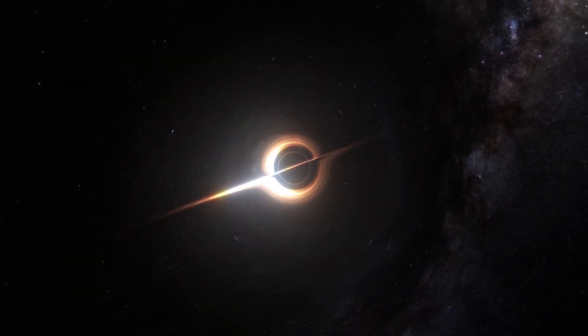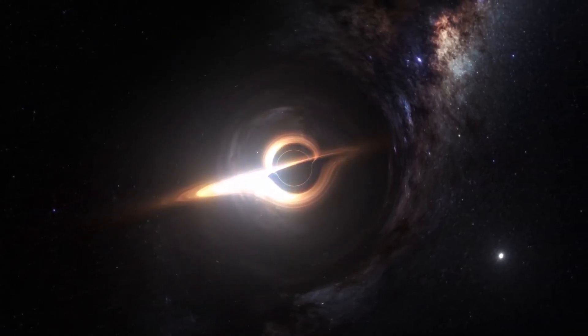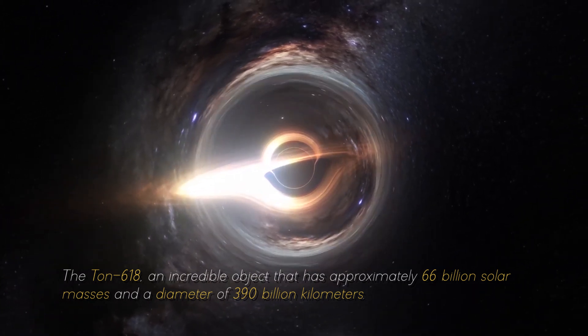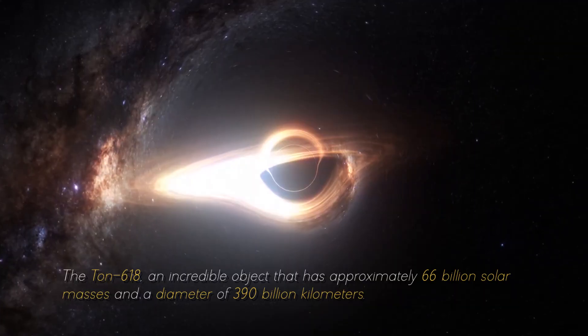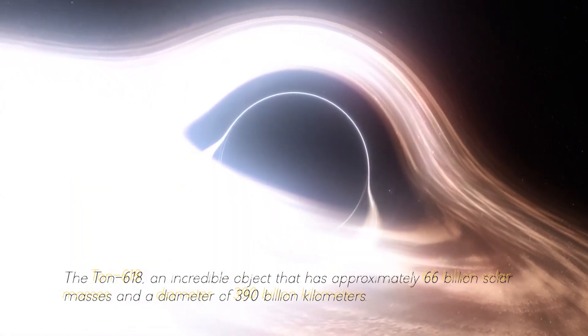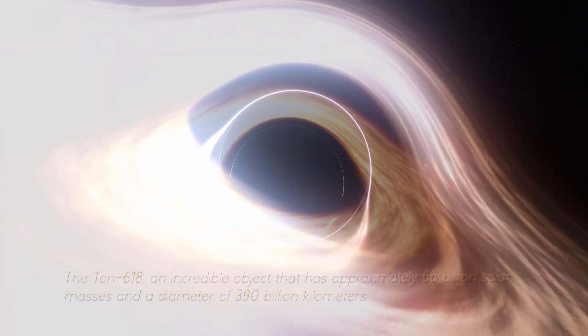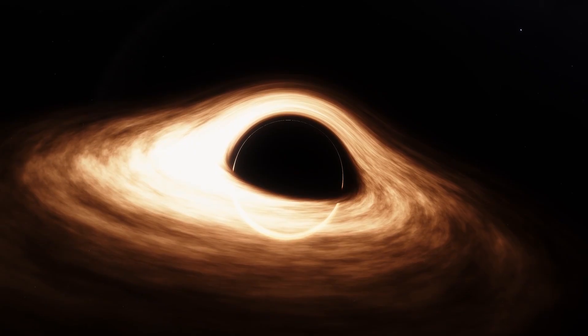Not everything ends here. This star cannot be compared with the most massive black hole in our cosmos, the Ton 618, an incredible object that has approximately 600 billion solar masses and a diameter of 390 billion kilometers. For now, we will stop measuring in kilometers and start measuring in light years.